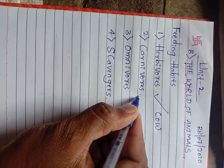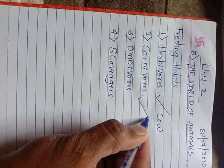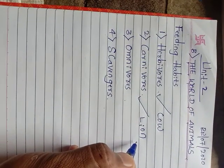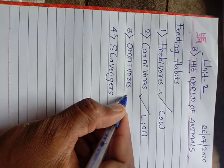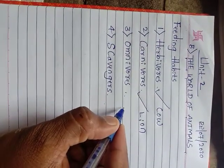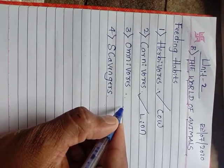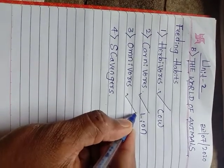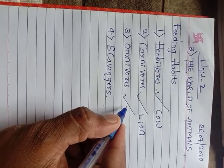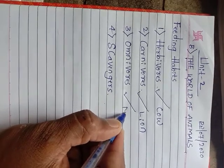eagles and snakes eat other animals. Such animals are called carnivorous. Examples: lion, tiger, etc. And third one, omnivorous — some animals like bears, crow, rat, and man eat both plants and animals. Such animals are called omnivorous.